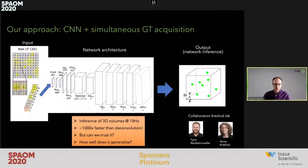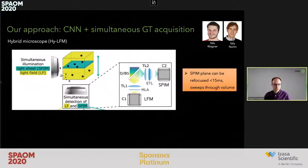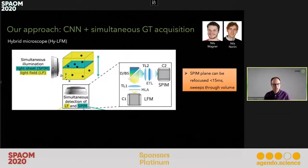Still, when we applied those networks, very often we found we were not completely able to trust them — it was a black box and we were not sure how well it generalizes. Brainstorming about how to solve this, we realized that our microscope could be rebuilt into a hybrid microscope, where we could simultaneously image not only the light field but also individual planes with a selective plane illumination microscopy modality.